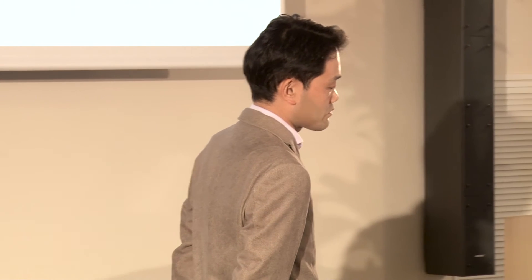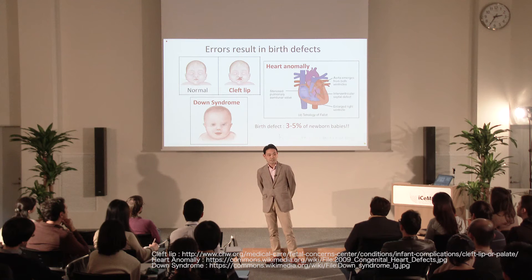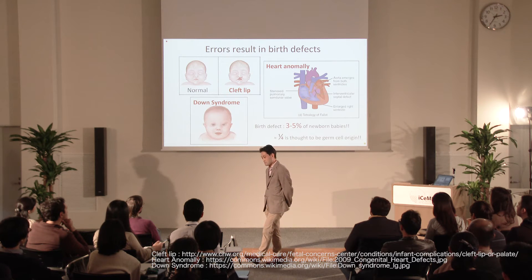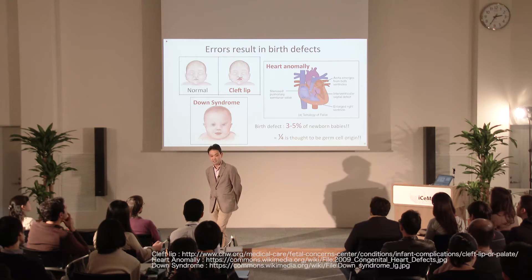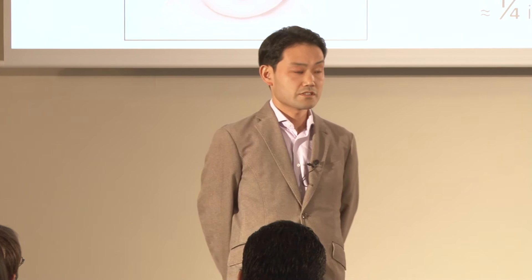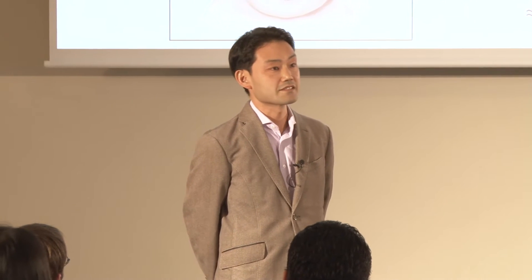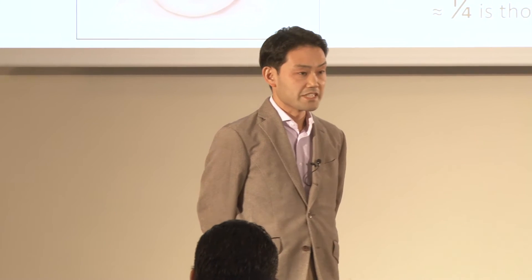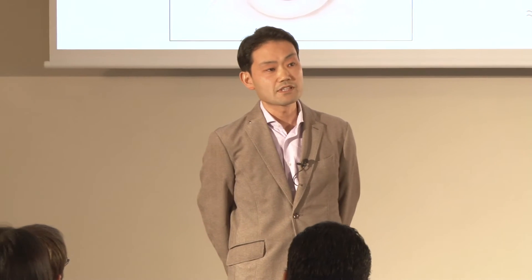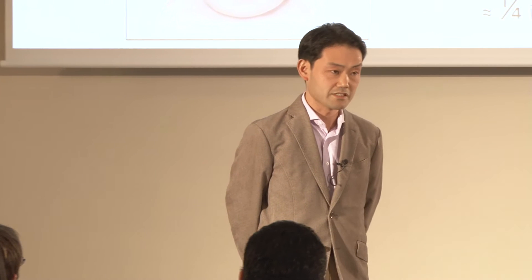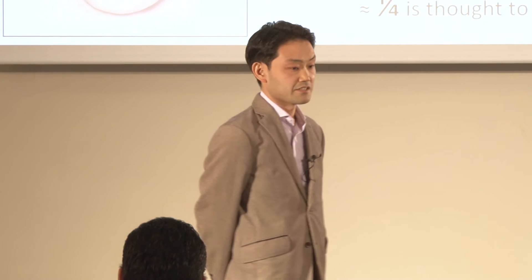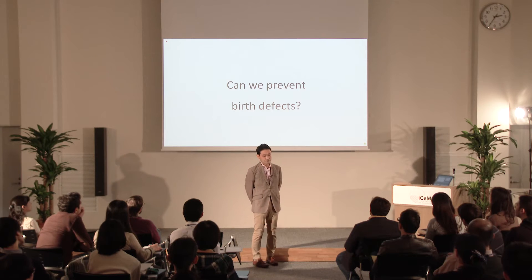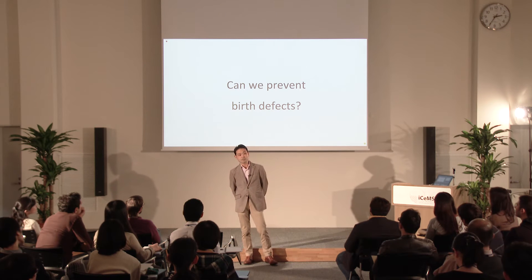That means there are at least one or two patients in one classroom at school. It is known that around a quarter of them come from the germ cells of the parents — genetic mutations or abnormal chromosome counts as seen in Down syndrome. Yet no one knows how it happens or what the mechanisms of these diseases are. How can we leave this unchallenged?